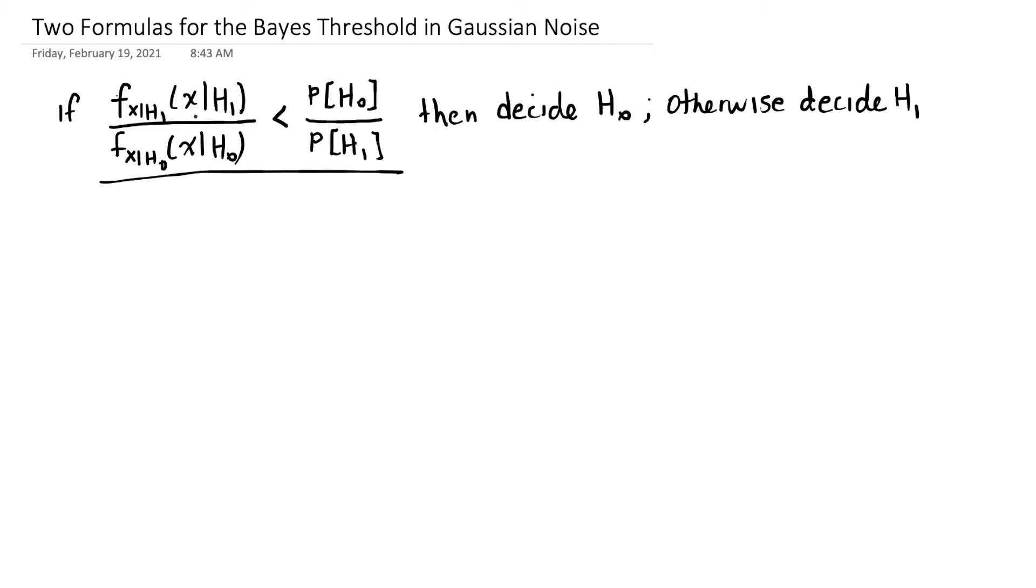My name is Neil Battuari. I'm following up on my last video segment about the Bayesian optimal threshold, and I'm going to talk about the Bayesian optimal threshold for the Gaussian case.